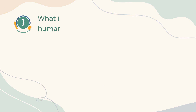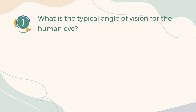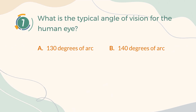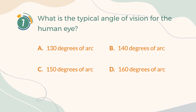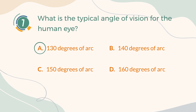Number 7. What is the typical angle of vision for the human eye? A. 130 degrees of arc. B. 140 degrees of arc. C. 150 degrees of arc. D. 160 degrees of arc. The correct answer is A. 130 degrees of arc.